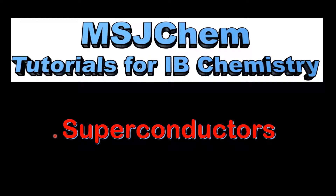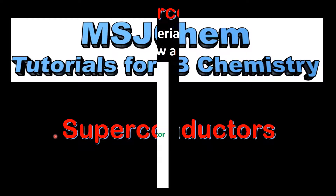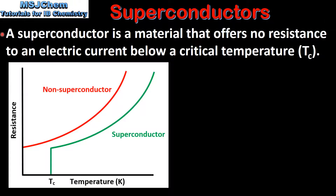This is MSJChem. In this video I'll be looking at superconductors. A superconductor is a material that offers no resistance to an electric current below a critical temperature.